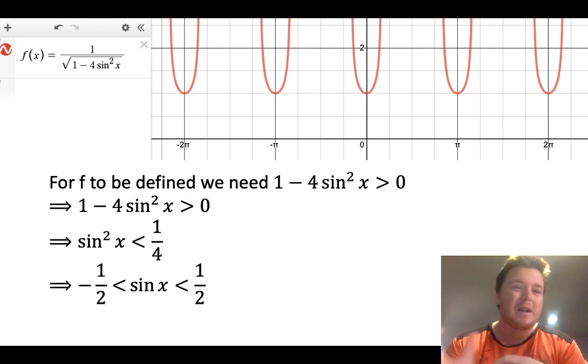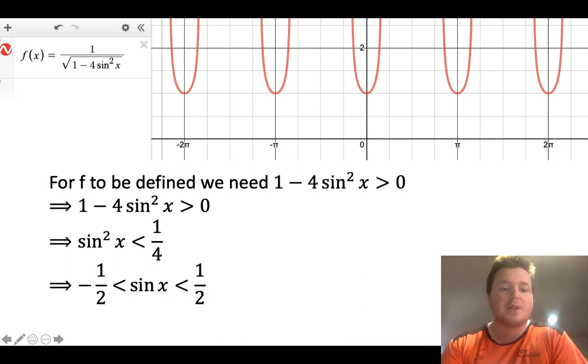The values of x that make the function defined. So we need the square root thing to be not only greater than or equal to 0, but we need it to be greater than 0 to avoid the division by 0. So if we do that, we end up getting that sine x has to be between minus 1 half and 1 half.